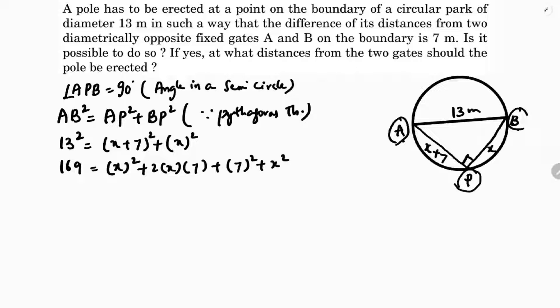So A square plus 2AB plus B square. 169 equals X square plus 14X plus 49 plus X square.